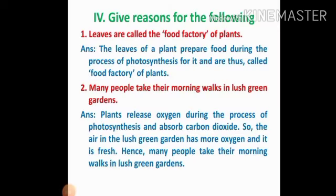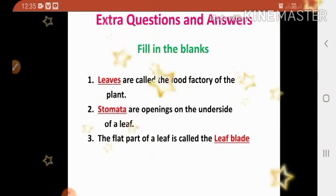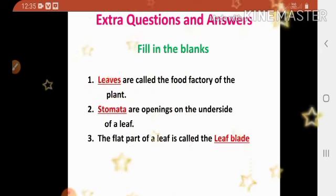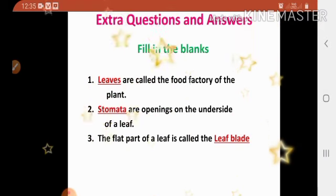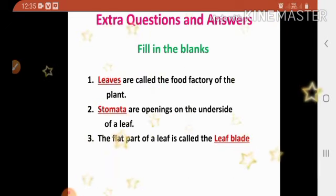We have completed the test book exercise question answers. Now I will give some extra question answers not in your test book. Question number one: fill in the blanks. First one: leaves are called the food factory of the plant. Second one: stomata are openings on the underside of a leaf. Third one: the flat part of a leaf is called the leaf blade.